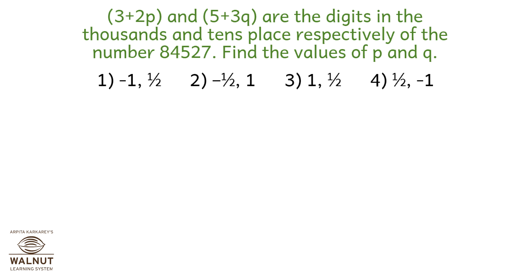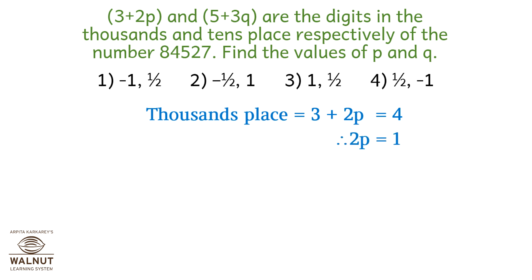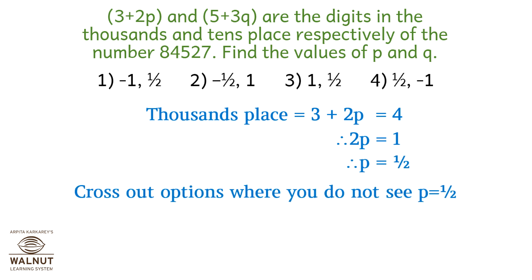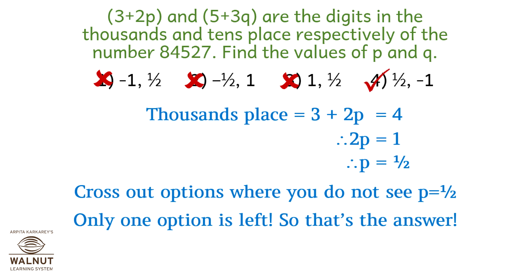3 + 2p and 5 + 3q are the digits in the thousands and tens places respectively of the number 8, 4, 5, 2, 7. What are the values of p and q? The thousands place is 3 + 2p = 4, so 2p = 1, therefore p = 1/2. Cross out options where p is not equal to 1/2, eliminating options 1, 2, and 3. So option 4 is the answer.